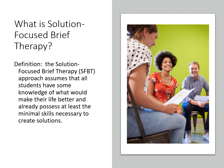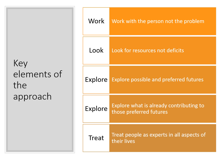The SFBT approach assumes all children and young people have some knowledge of what would make their life better, and they already possess at least minimal skills to create the solutions they need. Key elements are: working with the person, not the problem; looking for resources, strengths, and strategies rather than deficits; exploring possible and preferred futures; identifying what's already contributing to those preferred futures; and treating people as experts in all aspects of their own lives.